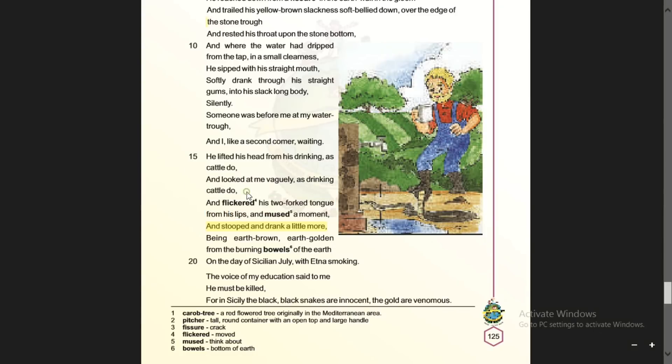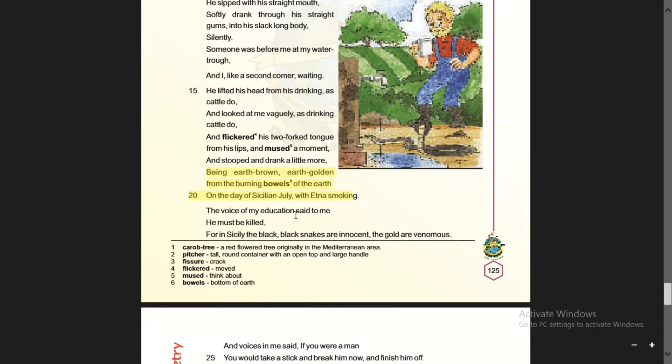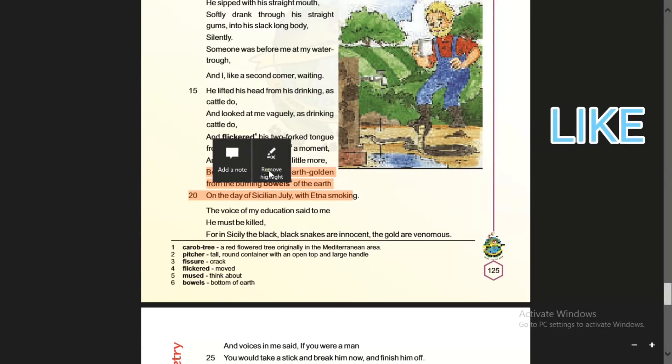Being earth brown, earth golden, from the burning bowels of the earth, on a day in Sicily in July with Mount Etna smoking. In the summer days the earth is very brown, golden and burning. Sicily in July is an Italian place with volcanic eruptions, so the poet remembers this scene.